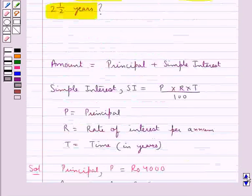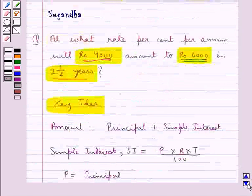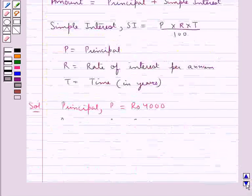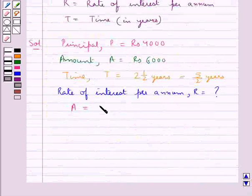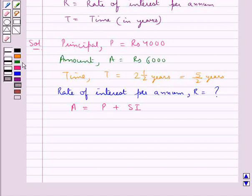Since we know that amount is equal to principal plus simple interest, A = P + SI, this means the simple interest SI is equal to amount minus principal.